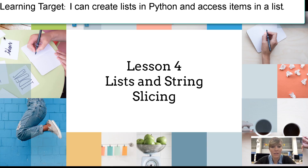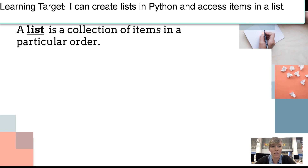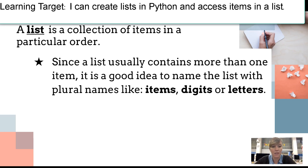Welcome to Lesson 4, Lists and String Slicing. The first big idea we're going to cover today is lists. A list is a collection of items in a particular order. Since a list usually contains more than one item, it's a good idea to name the list with plural names like items, digits, or letters.